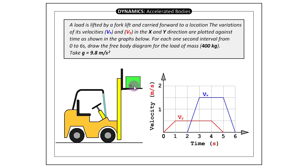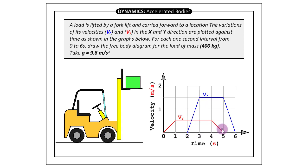Here is the mass, the load being carried by the lift. It is moving both in the forward direction as well as in the vertical direction, and we have to plot the free body diagrams — the forces acting on this mass for each one second interval. So between 0 to 1 second, 1 to 2, 3, 4, 5, and 6 — we'll be plotting six free body diagrams.